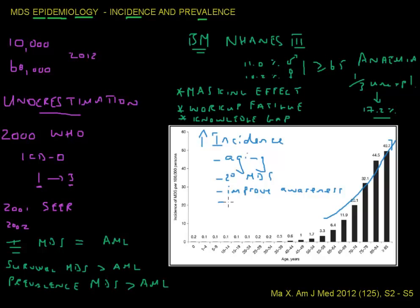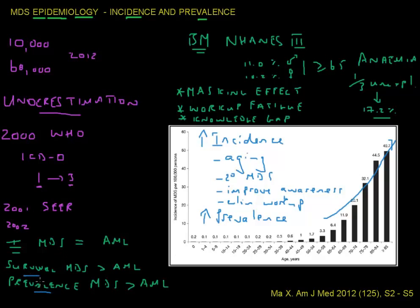More thorough clinical workup will also contribute — patients worked up more thoroughly are more likely to be diagnosed. Worldwide there is an increased awareness of doing bone marrows in patients with unexplained cytopenias or anemia, which will lead to an increase in diagnoses. The prevalence will also increase: if survival is currently the main factor driving prevalence, we expect the survival of MDS patients to improve further because of the large number of new therapies now available, increasing the number of patients living with the disease.